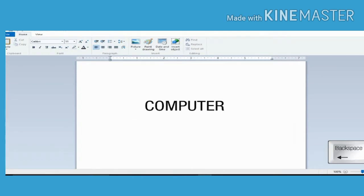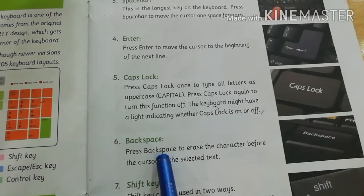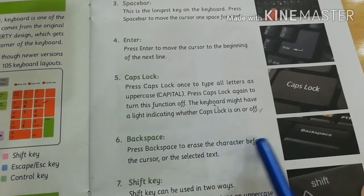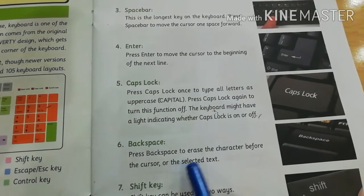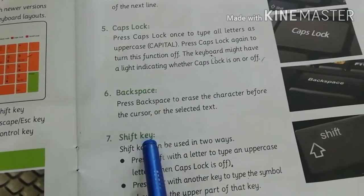Now read from the book. Press backspace to erase the character before the cursor or the selected text. Next key is shift key.